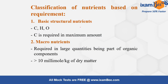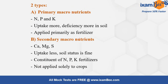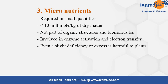Classification of nutrients based on requirement: structural nutrients (C, H, O) are required for proper plant formation. Macronutrients are those where the concentration required is more than 10 millimole per kg of dry matter; they are further classified into primary (NPK — highest uptake, most commonly applied as fertilizers) and secondary macronutrients. Micronutrients are those where the concentration required is less than 10 millimole per kg of dry matter.